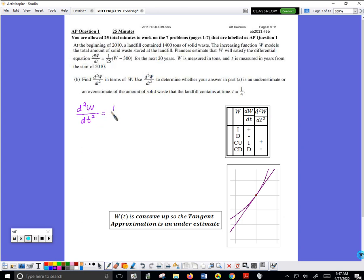1 over 25 is a multiplying constant. The derivative of W would be DW over DT, the derivative of 300 would be 0. Now they're a little tricky on this problem because if you stop here you won't get the point.